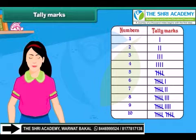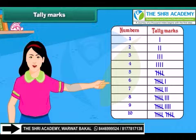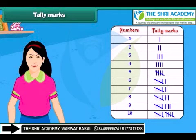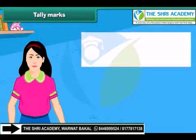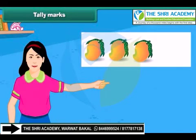While representing 5 objects, 4 vertical lines are drawn and a 5th diagonal line cuts the 4 vertical lines. For example, to count 3 mangoes, we make 3 tally marks.